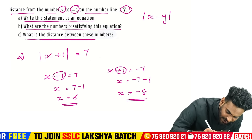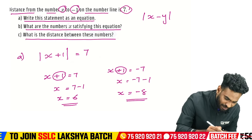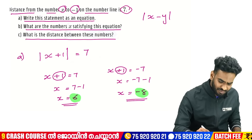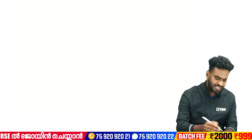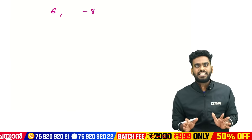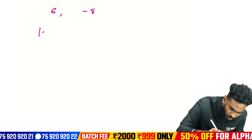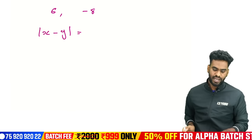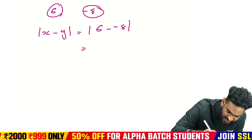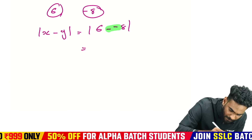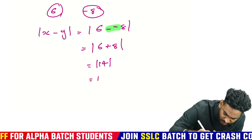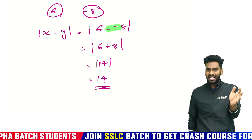What is the distance between these numbers on the number line? The distance formula uses modulus: mod of X minus Y. So mod of 6 minus minus 8 equals mod of 6 plus 8, which equals modulus of 14, that equals 14. The distance is 14.